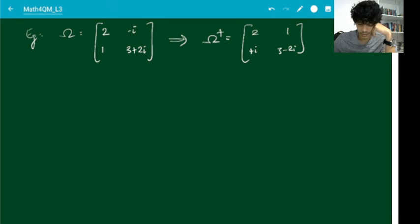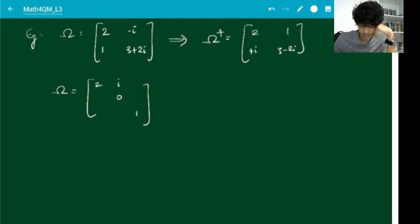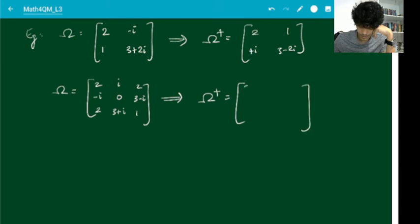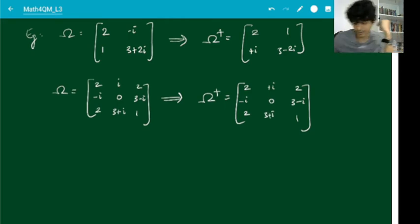Pretty straightforward. What if I gave you a 3×3 matrix with entries (2, 0, 1; i, −i, 2; 2, 3+i, 3−i)? Then ω† is found by first transposing, then complex conjugating wherever you find i, turning it into −i. You will notice that in this particular case ω and ω† are the same — this is a special kind of matrix we will talk about in a bit.